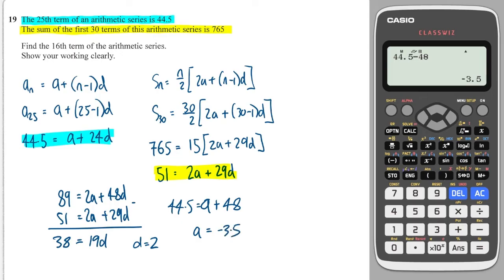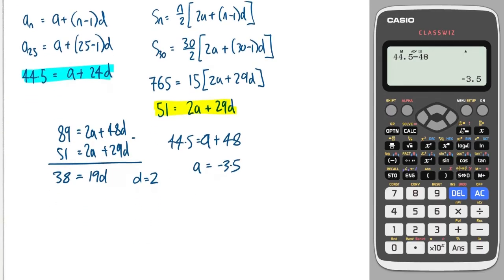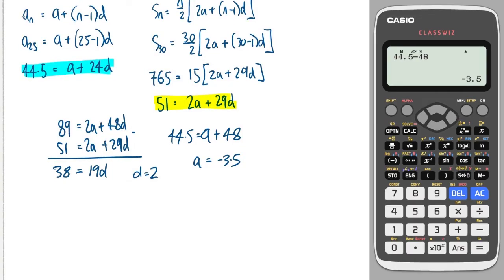And then finally, it says find the 16th term of this arithmetic sequence. Well, I'm going to use the nth term formula again, which is this one here. So a16 is equal to a, which is minus 3.5, plus n minus 1 is 16 minus 1 times d, which is 2. So I do minus 3.5 plus 16 minus 1 is 15 times 2. And I get 26.5. Perfect.